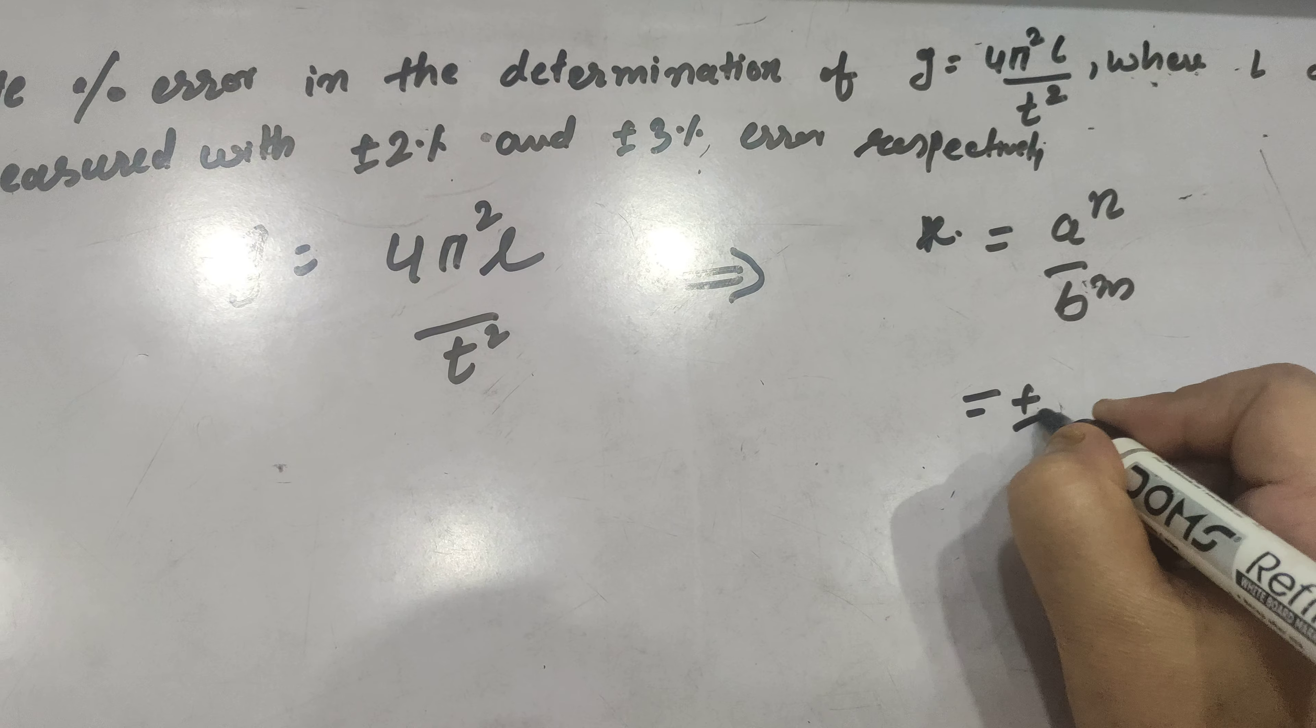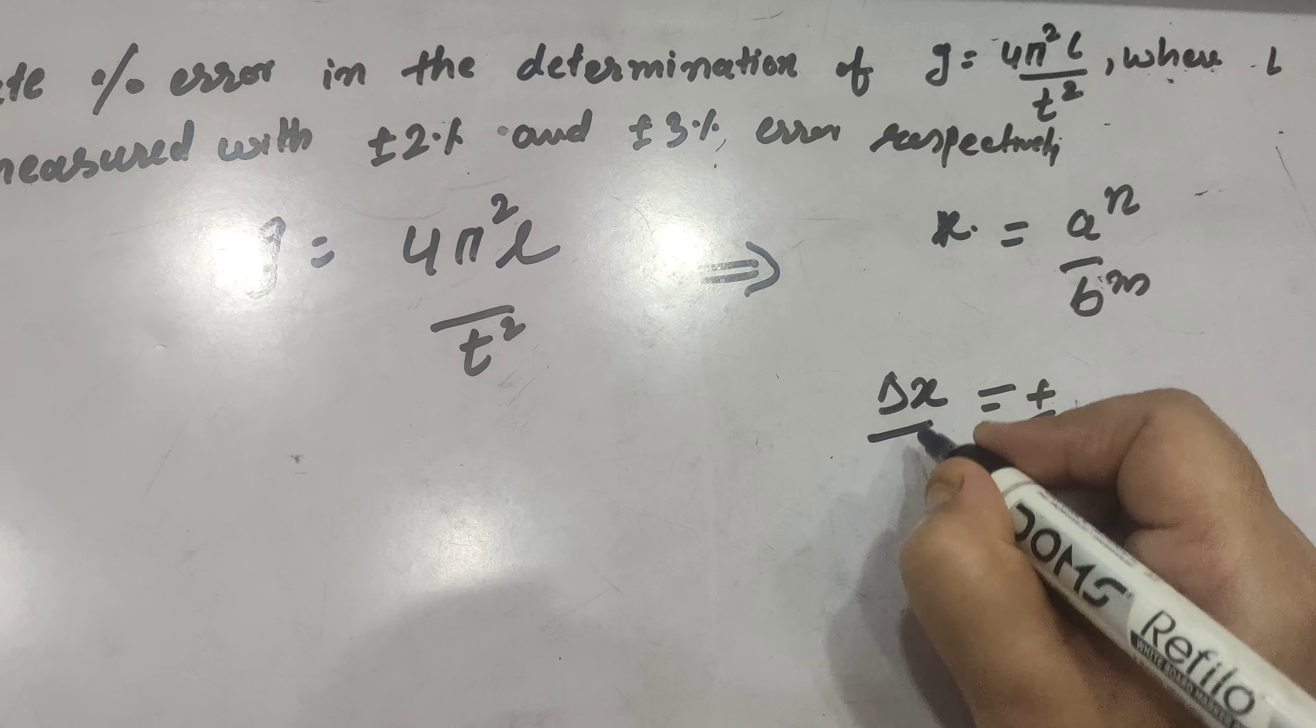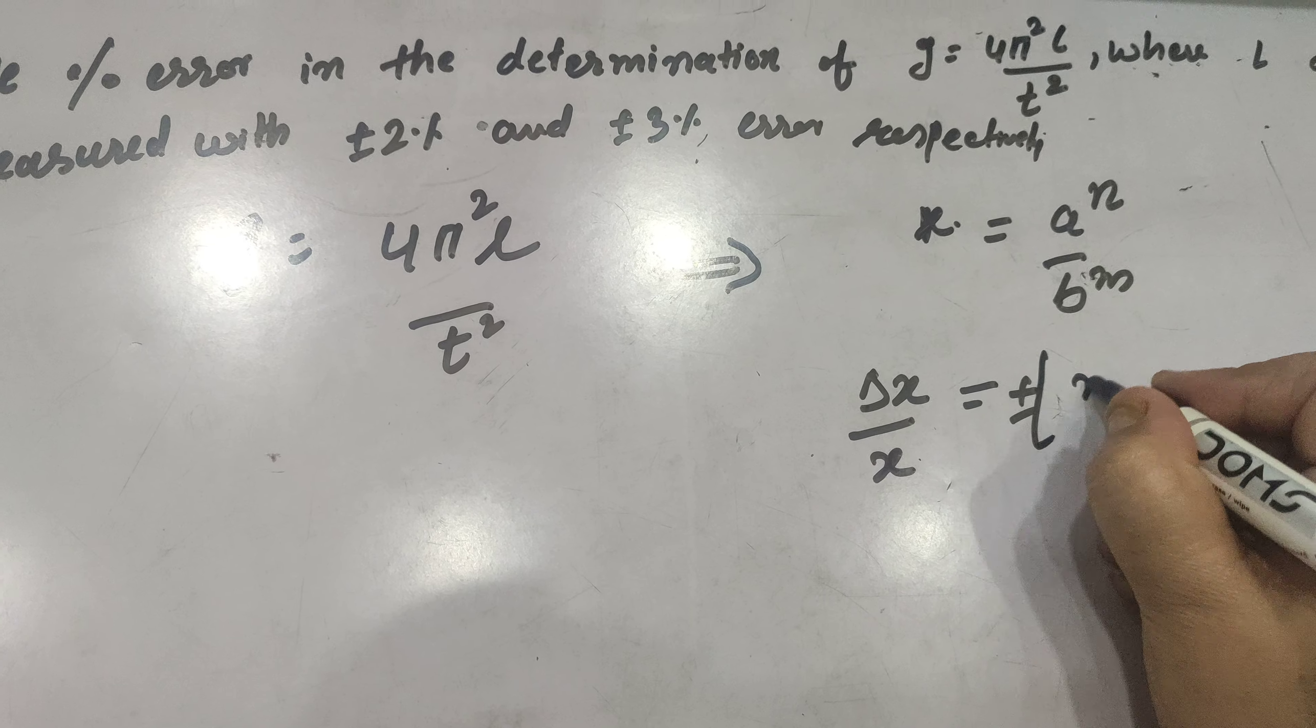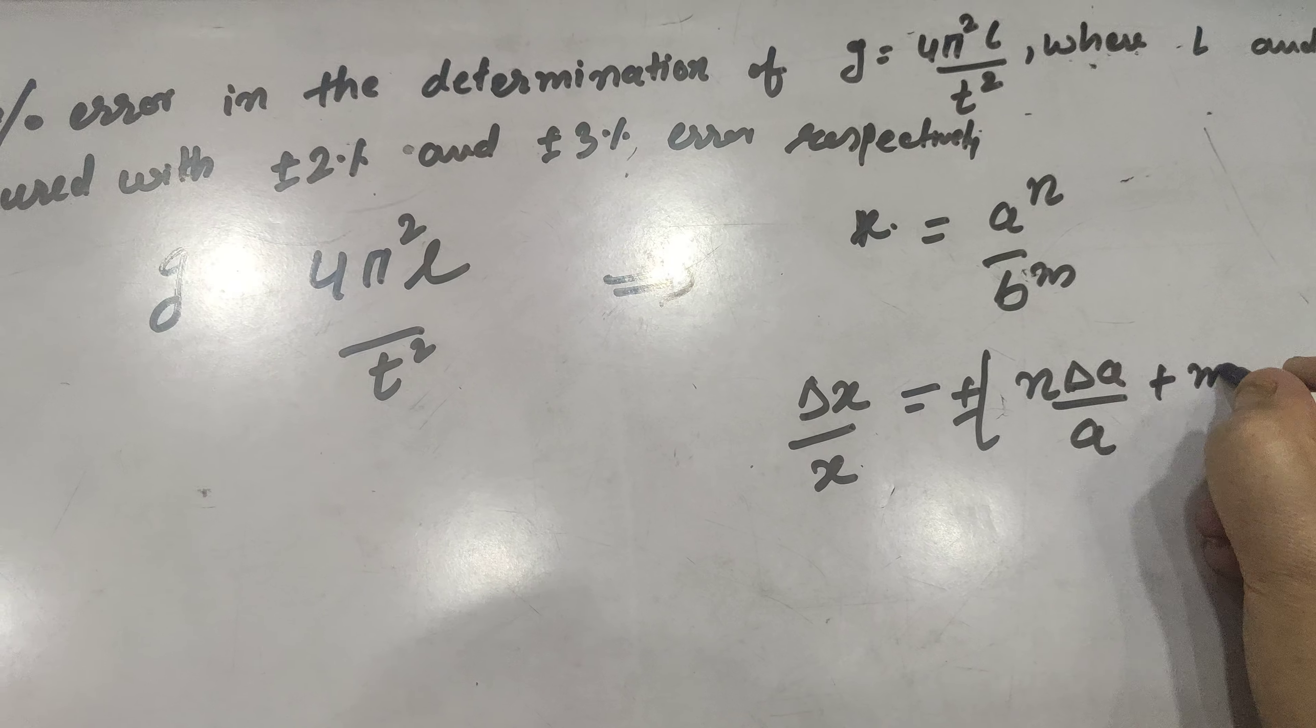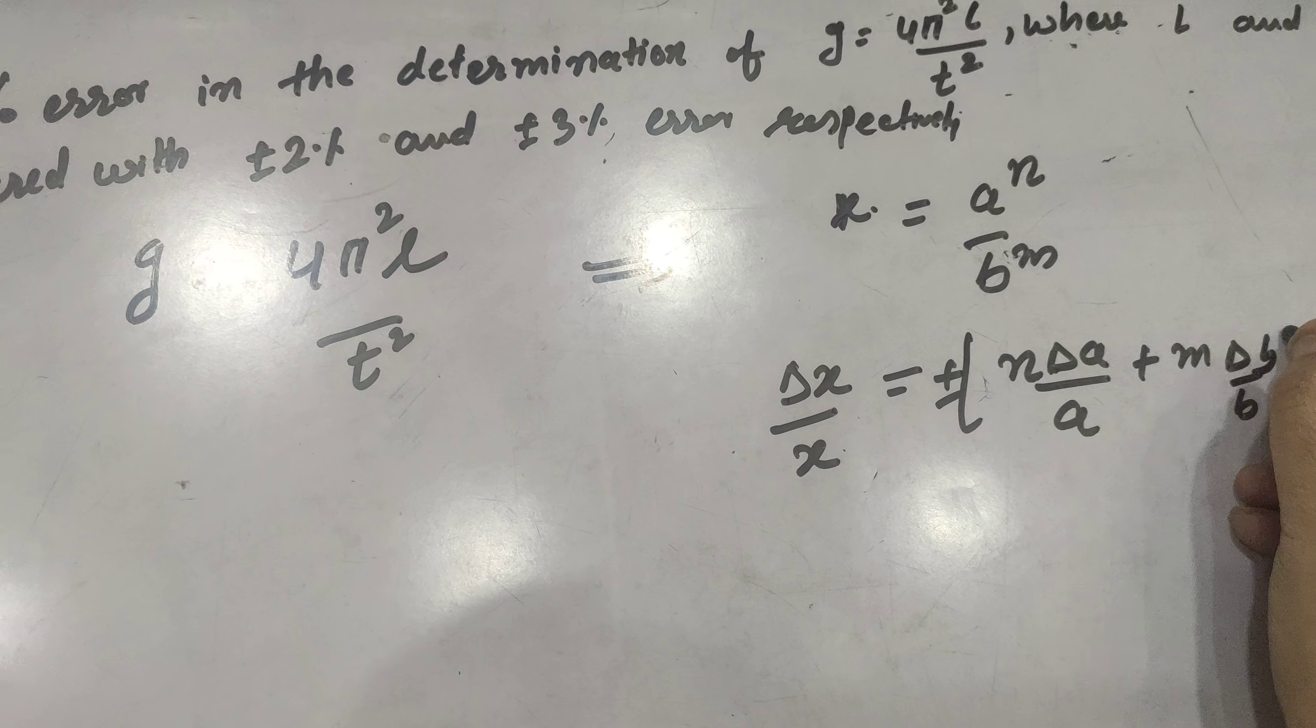For this we have used the formula plus minus. If we want to calculate error delta X by X is equal to plus minus N delta A by A plus M delta B by B.